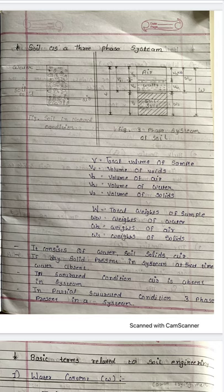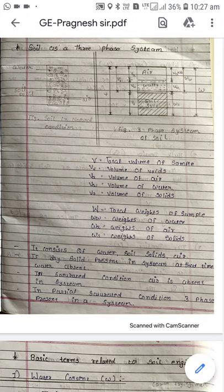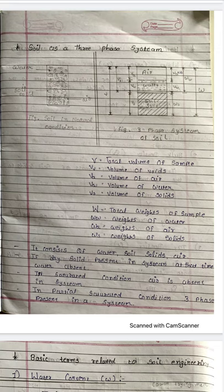Next, let us move on to another topic: soil as a three-phase system. The soil consists of three constituents — mainly soil solids, water, and air — combined together forming a complex material called soil.